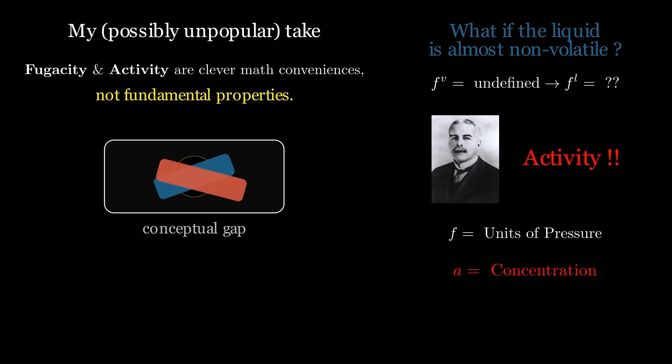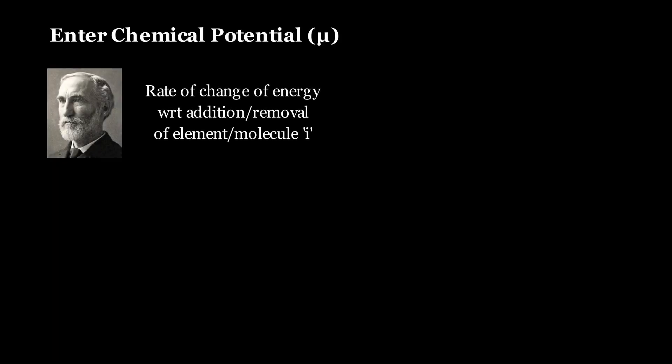Now finally, we'll do the opposite. Set fugacity aside and bring in Gibbs's truly general idea, the chemical potential, μ. Gibbs defines μ as the rate of change of a system's energy when an infinitesimal amount of species i is added or removed, with the appropriate variables held fixed. It's the energetic price per particle.